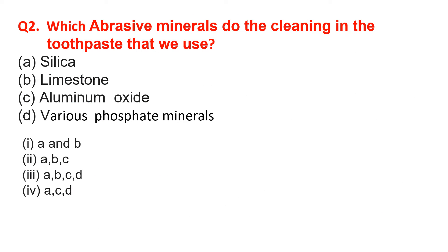Which abrasive minerals do the cleaning in the toothpaste that we use? Options are Silica, Limestone, Aluminium Oxide, and various phosphate minerals. The correct option is Option 3 — all of these: Silica, Limestone, Aluminium Oxide, and various phosphate minerals are used for cleaning in toothpaste.